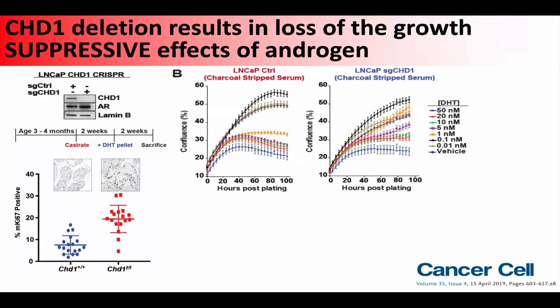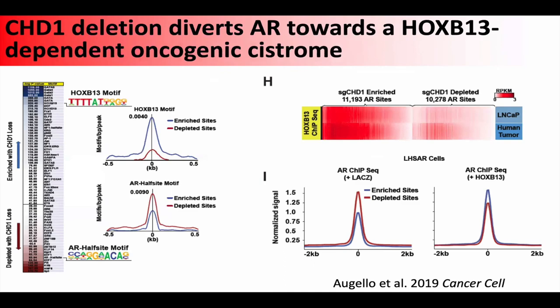How is CHD1 doing this? We did a ChIP-seq for the androgen receptor in the setting of CHD1 deletion and saw a redistribution of androgen receptor. Essentially, the androgen receptor moves away from classic androgen receptor response elements and AR half sites, and becomes more associated with HoxB13 motifs. HoxB13 is associated with the prostate cancer cistrome for the androgen receptor. So when we delete CHD1, the androgen receptor gets redistributed away from growth suppressive programs and towards oncogenic programs associated with HoxB13.